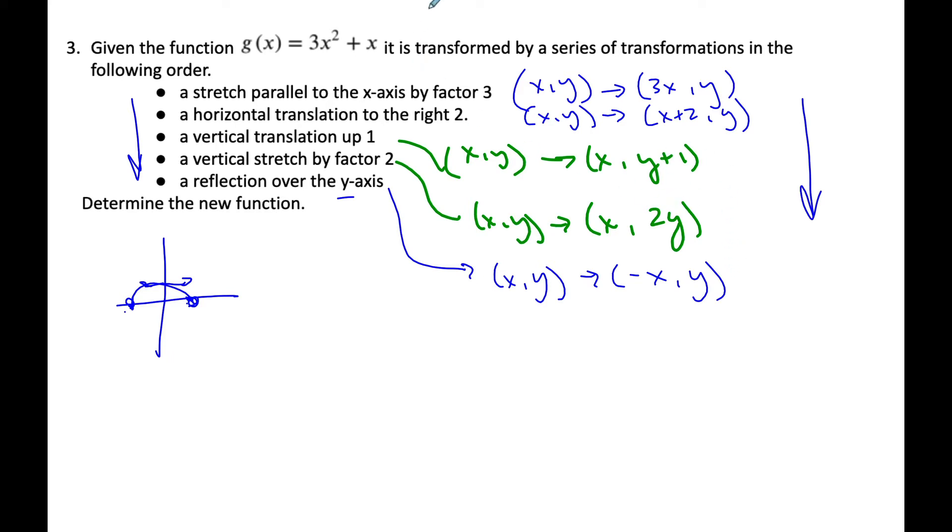and the green ones affect the y's. And so I'm going to start, my image point for x, I'm going to call u. This is my new x value. So my old x, I'm going to multiply by 3 in this order.